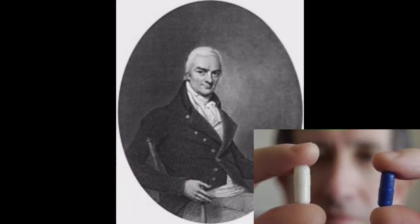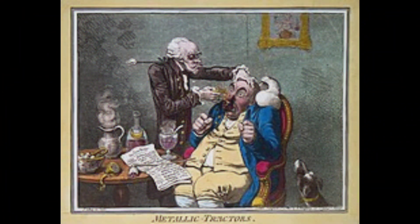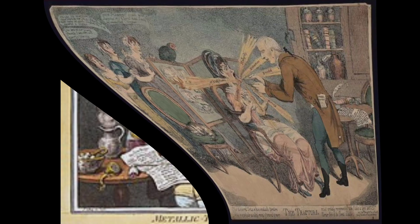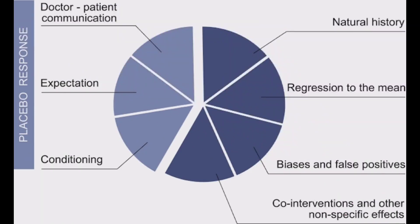So when was the first time placebos were used? It was used in 1922 by Nicholas, a bacteriologist at the New York State Psychiatry Institute. So initially, the concept of placebo was introduced in a psychiatric trial.